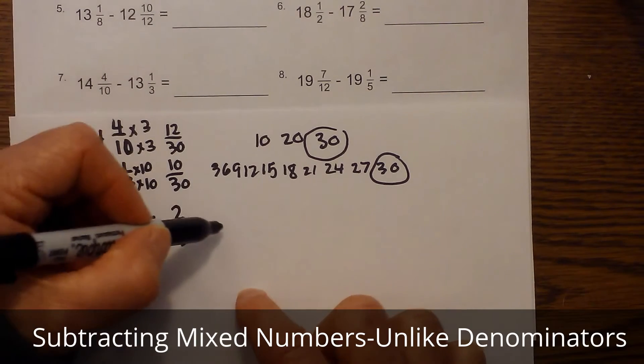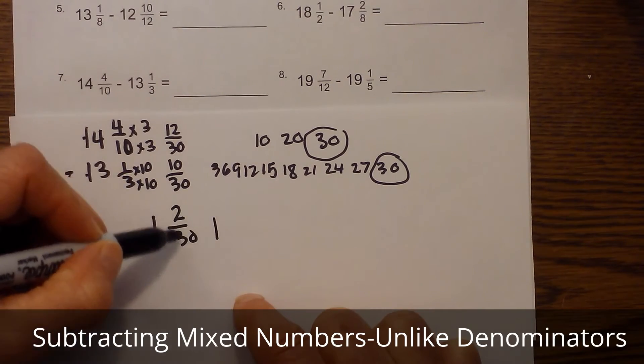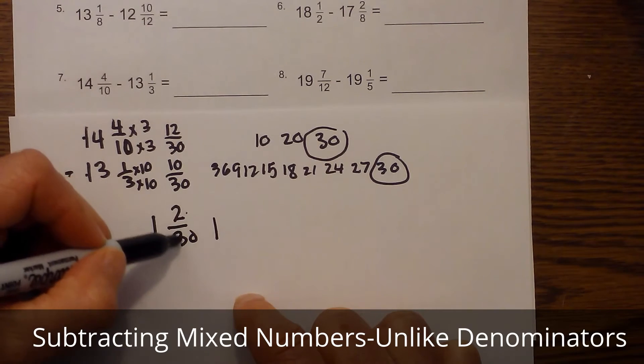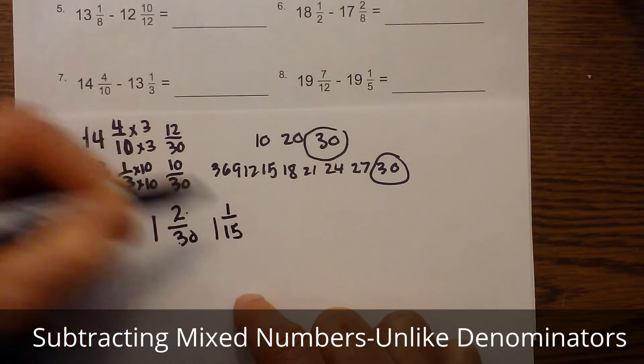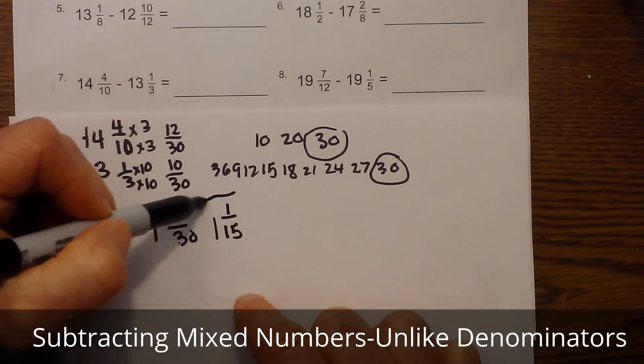But I can simplify, so it will become one—two goes into two one time, two goes into thirty fifteen times—so it becomes one and one fifteenth.